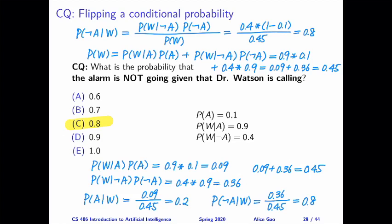If we are going to apply the Bayes rule straightaway, here is what we're going to do. We want to calculate the probability of not A given W. And by applying the Bayes rule, that means on top in the numerator, we have the conditional probability flipped, plus we have the prior probability of not A, and then the denominator is the prior probability of W.